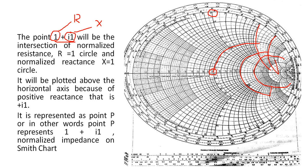The point 1 plus j1 will be the intersection of normalized resistance R equals 1 circle and normalized reactance X equals 1 circle. We will look for the point where these two circles intersect with each other. This is the point where these two circles are intersecting. It will be plotted above the horizontal axis because of the positive reactance, that is plus j1. It is represented as point P, which represents 1 plus j1 normalized impedance on Smith chart.